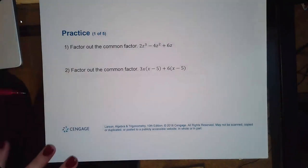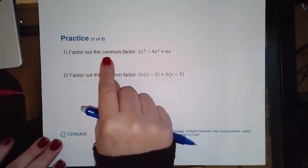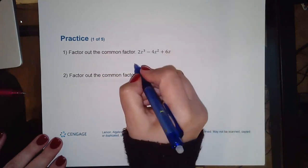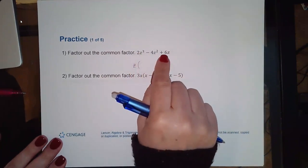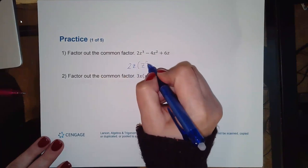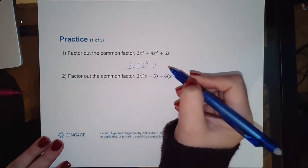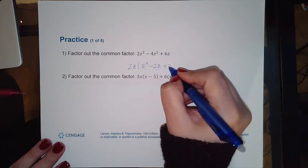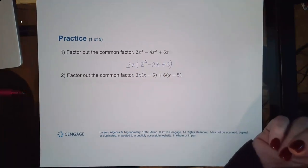First worked example: factor out the common factor from 2z³ - 4z² + 6z. All three terms have a z, and all are divisible by 2, so factor out 2z. Result: 2z(z² - 2z + 3). That's all that's asked here — just pull out the greatest common factor.